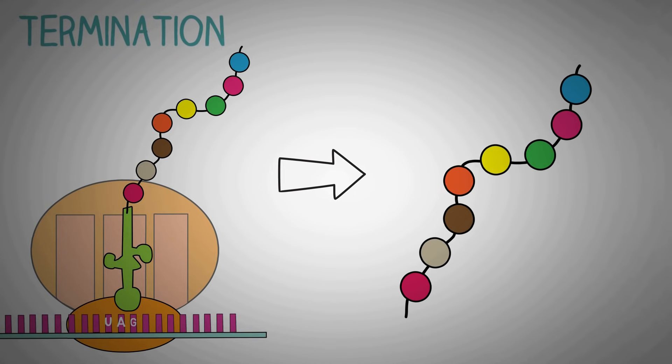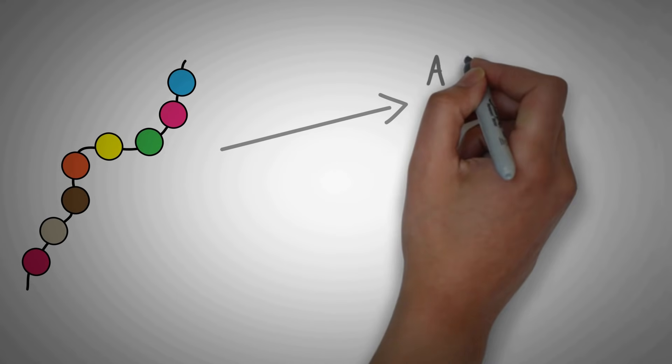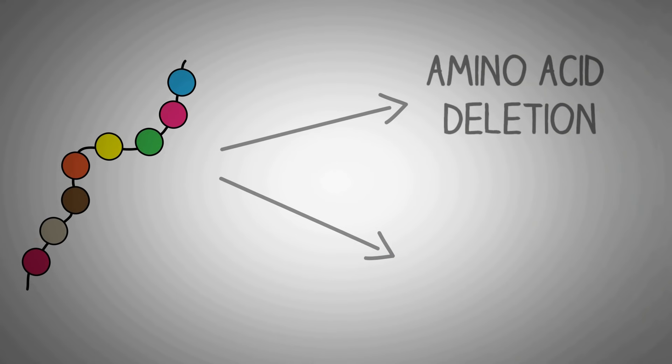So, after the ribosome finishes the protein synthesis, is the protein complete? Not really. After the protein is formed, it goes through some additional processing like some amino acids may be deleted and some proteins also undergo folding to form a more stable structure.